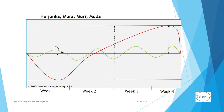Here is a graphic that illustrates Heijunka, Mura, Muri, and Muda. The horizontal line in the center is the line of optimal capacity with the given resources. The red line illustrates a cycle of Mura over a monthly period, where the month begins with a lot of slack, idle time, and under-utilization of resources — in other words, Muda. As the month progresses, there is more and more pressure to produce and deliver.